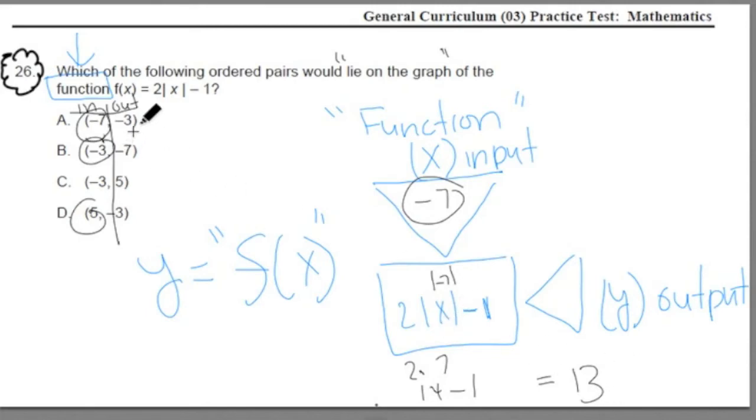Does that match up with -3 for A? No, it doesn't. So we can cross out A. A is not a point, an ordered pair, that exists on this graph. Cross it out.